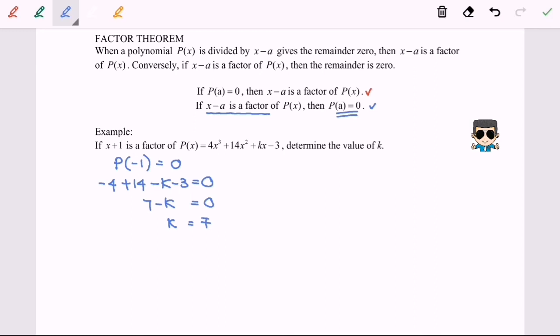I remind you to substitute the value into the function. So P(x) equals 4x³ plus 14x² plus 7x minus 3. Thanks for watching.